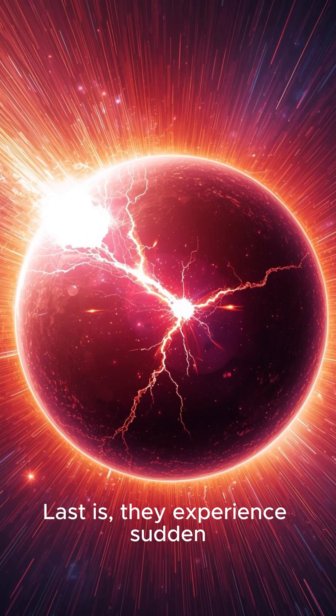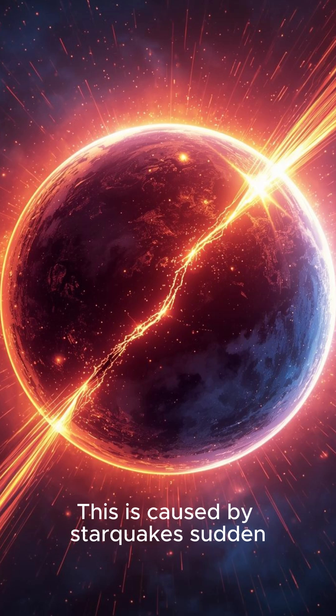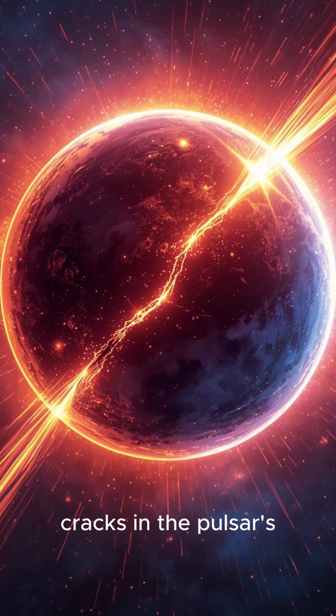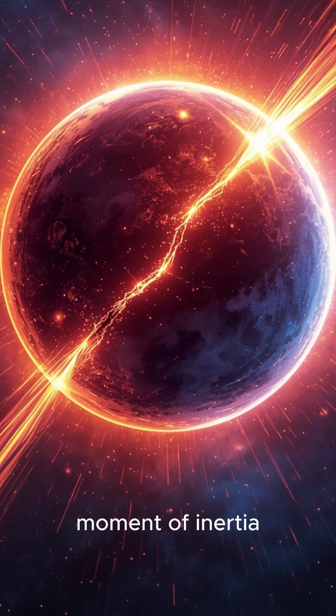Last, they experience sudden unpredictable speed-ups called glitches. This is caused by starquakes, sudden cracks in the pulsar's ultra-rigid iron crust, which shift the star's moment of inertia.